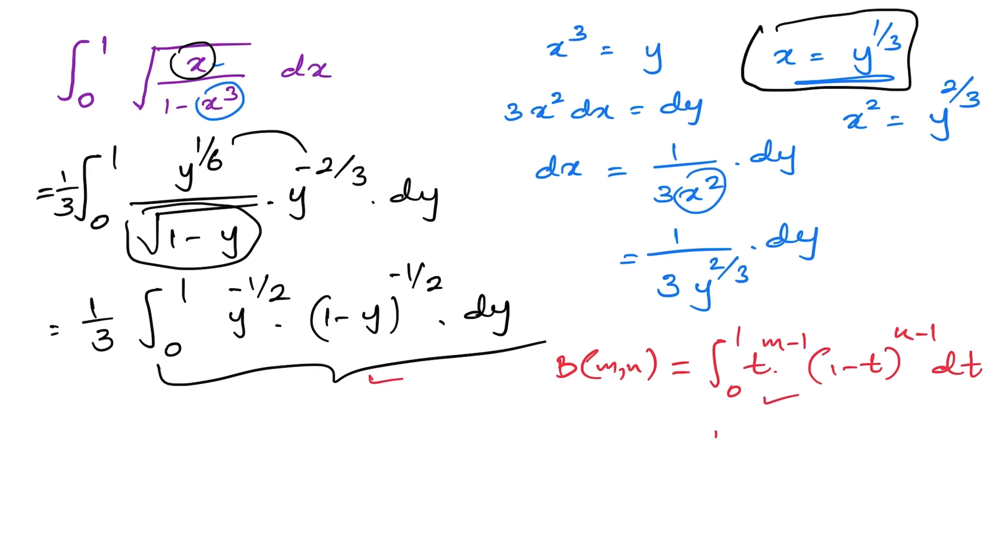We know here m minus 1 is equal to minus 1 half, so m is equal to 1 half. Same as also n is equal to 1 half. Here we have 1 over 3 beta of 1 half, comma 1 half.